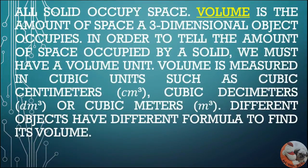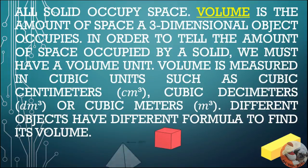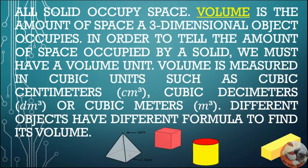All solids occupy space. Volume is the amount of space a three-dimensional object occupies. In order to tell the amount of space occupied by a solid, we must have a volume unit. Volume is measured in cubic units such as cubic centimeters, cubic decimeters, or cubic meters.